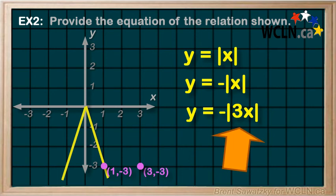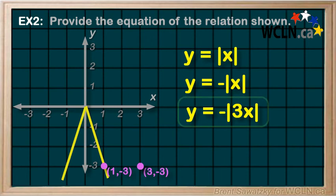So, we know that we can add a 3 to our equation as a coefficient in with our x. And it has to be within the absolute signs, right in with the x. So, the equation describing this graph would be y equals negative the absolute of 3x.